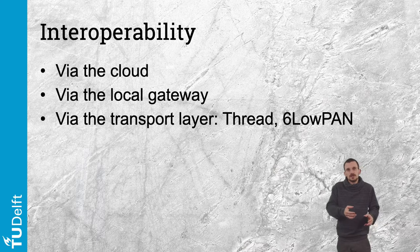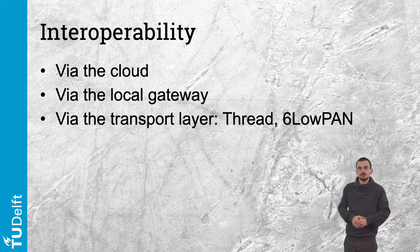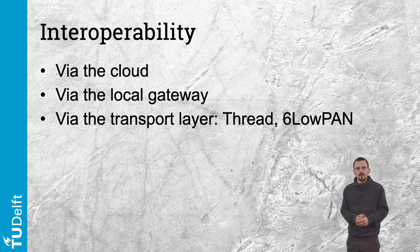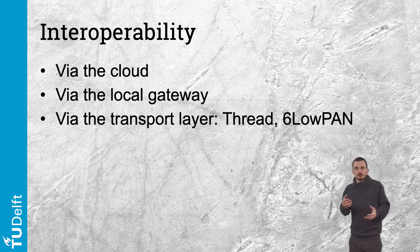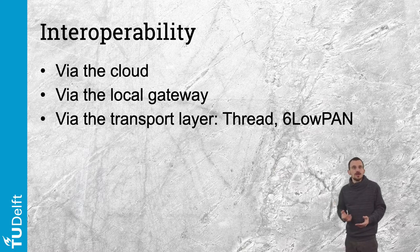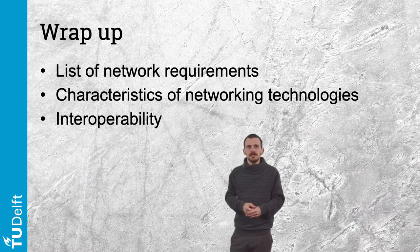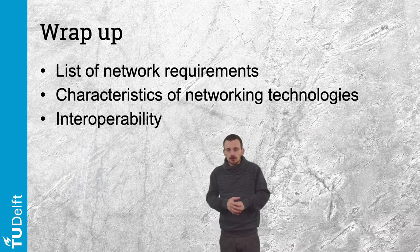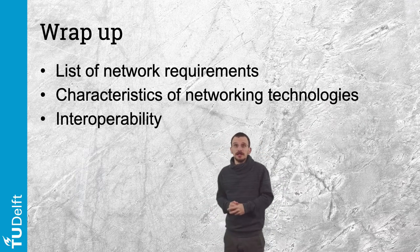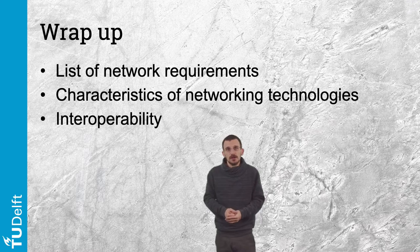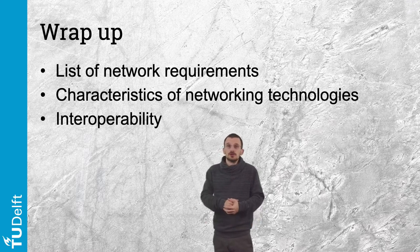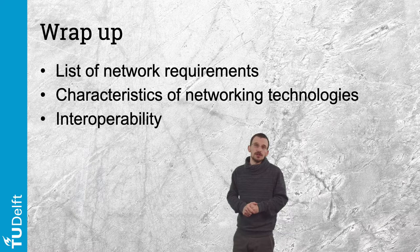A second solution is the multi-protocol gateway. A gateway translates from one protocol to another; some gateways can translate into several protocols, bridging the gap locally. Finally, some network technologies can be bridged at the transport layer — referring back to the four internet layers covered in the previous module. To summarize, we highlighted how to develop a list of network requirements in the context of IoT, introduced networking technologies, and underlined the need for interoperable solutions to bridge the many network industry standards.